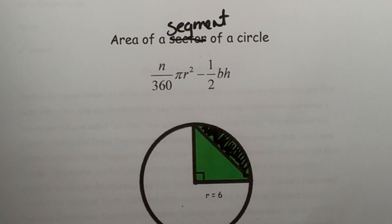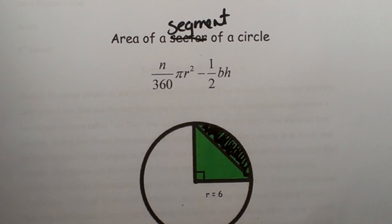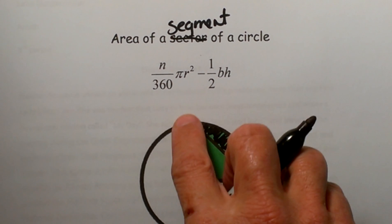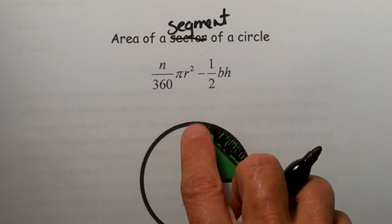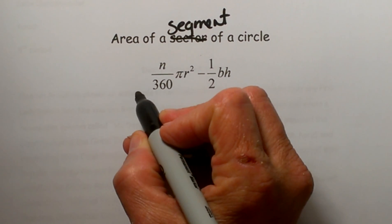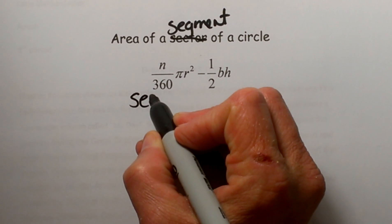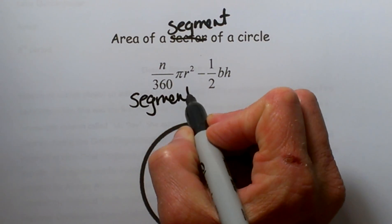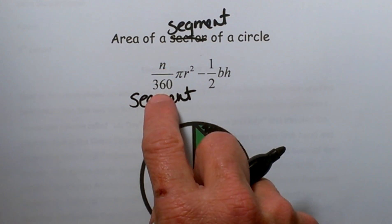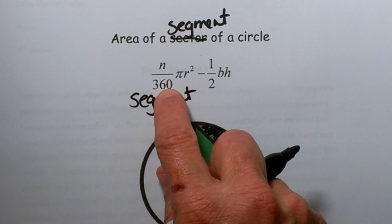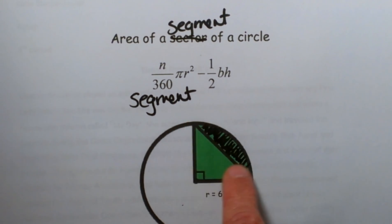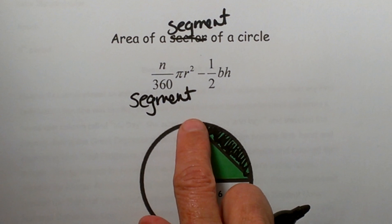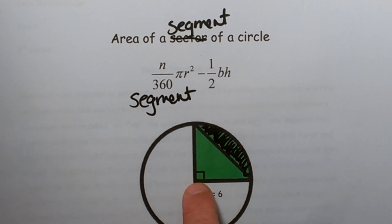So how do you find that? First we have to find the area of the whole original green shaded part, which is the area of our sector. You take the angle measure over 360 times pi r squared to find the area of that whole part. Then we are going to subtract out the area of the triangle.